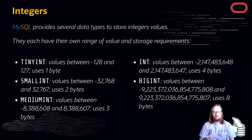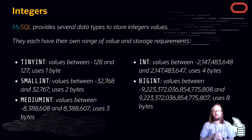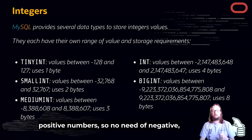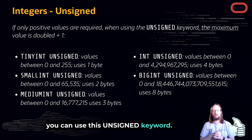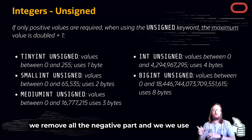If we want to store very large numbers we use BIGINT. As you can see, BIGINT supports a very large range of values. But if even that range is not enough and you only need positive numbers — no negatives — you can use the UNSIGNED keyword.